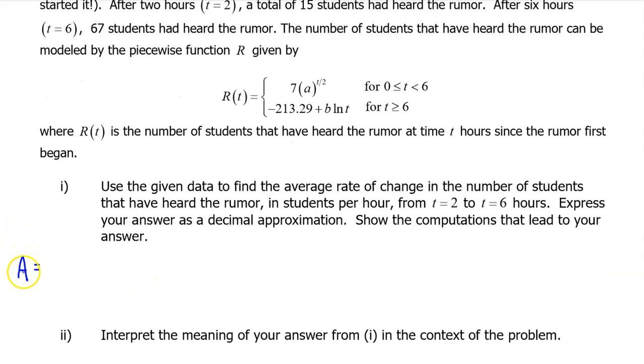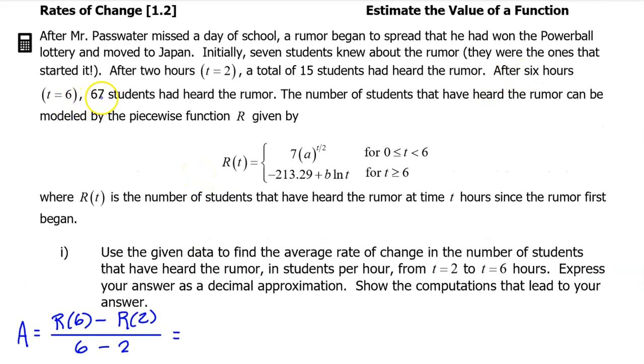Let's define a letter A that will equal the value of this average rate of change. On the interval from 2 to 6, the average rate of change of r will be given by r at 6 minus r at 2 divided by 6 minus 2. We are given the value of r at 6—after 6 hours, 67 students had heard the rumor. We are also given the value of r at 2. At time t equals 2, a total of 15 students had heard the rumor. So, we have this expression for the average rate of change.